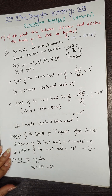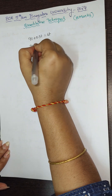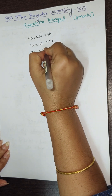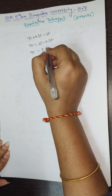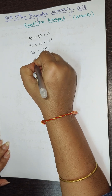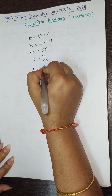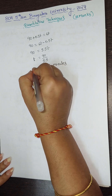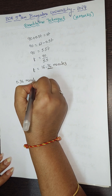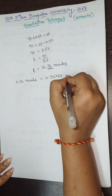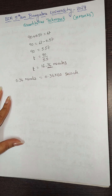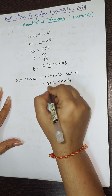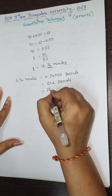We set up the equation by equating the two positions: 90 + 0.5t = 6t. Rearranging: 90 = 6t - 0.5t = 5.5t. Solving for t: t = 90 divided by 5.5 = 16.36 minutes. Converting 0.36 minutes to seconds: 0.36 × 60 = 21.6 seconds, which rounds up to 22 seconds.